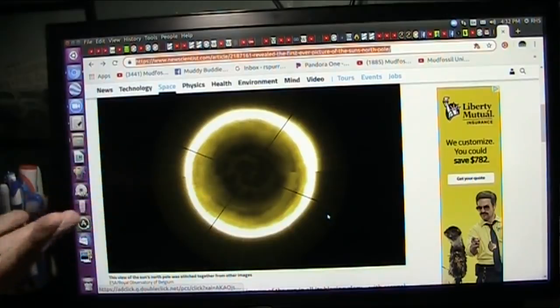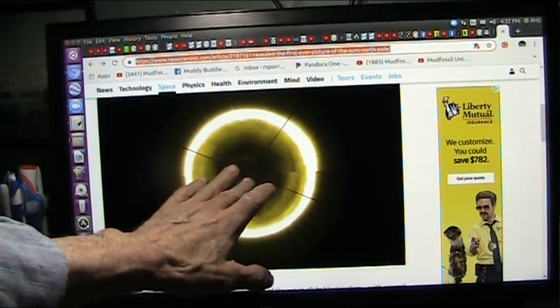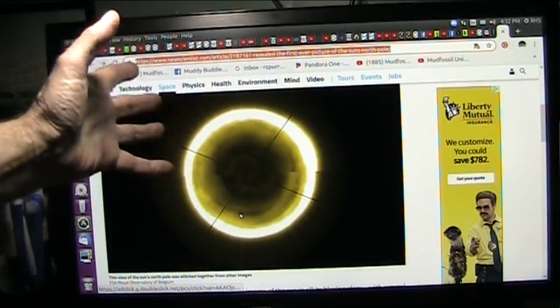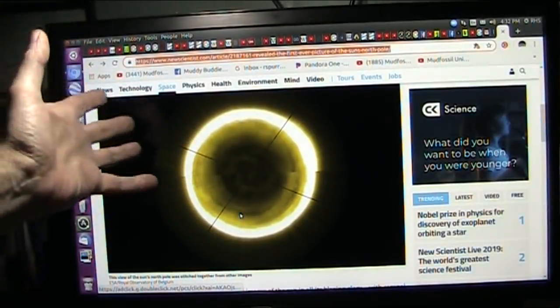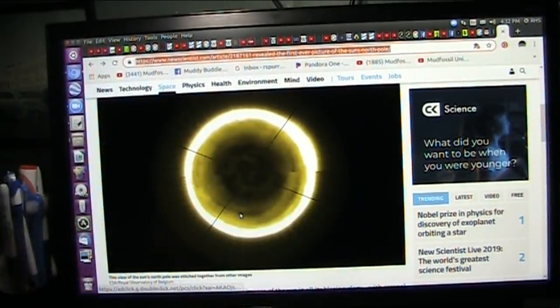All right, this is basically what they're saying is almost one of the first ever shots of the North Pole of the Sun. And you can see there's not that much energy up there because it is spinning. And it's just like us, where our poles, the North and South Pole, they're cold because they don't interact the way the equator does scrubbing through space.